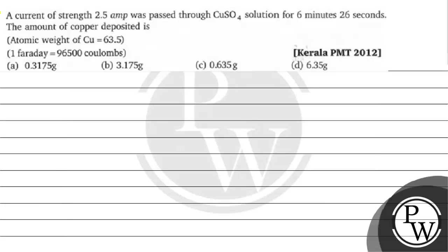Hello students, let's read this question. A current of strength 2.5 ampere was passed through copper sulfate solution for 6 minutes 26 seconds. The amount of copper deposited is — atomic weight of copper is 63.5, Faraday is equals to 96,500 coulombs. Option A is 0.3175 gram, Option B is 3.175 gram, Option C is 0.635 gram, Option D is 6.35 gram.